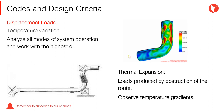Temperature changes induce thermal loads in a piping system. This occurs when the expansion or contraction of the piping system is not free, but the displacement is restricted by supports, anchors, and equipment nozzles.